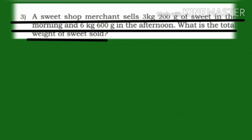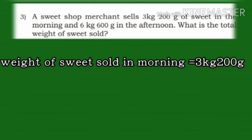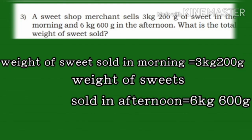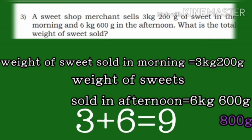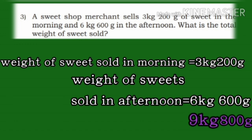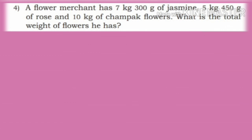Third problem: A sweet shop merchant sells 3 kg 200 grams of sweets in the morning and 6 kg 600 grams in the afternoon. What is the total weight of sweets sold? Add grams first: 200 plus 600 is 800 grams. Next add kilograms: 3 plus 6 is 9 kg. Total weight of sweets sold is 9 kg 800 grams.